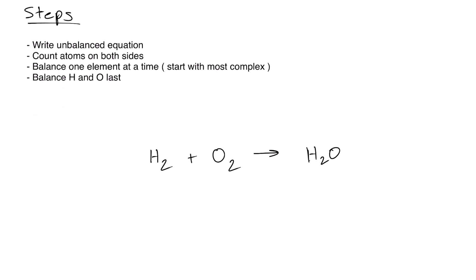Let's go over the first example. We can see that we have two hydrogens on the left and two hydrogens on the right. We have two oxygens on the left and one oxygen on the right. So we're going to write a 2 in front of the H₂O, and that'll give us a total of four hydrogens on the right and two oxygens on the right.